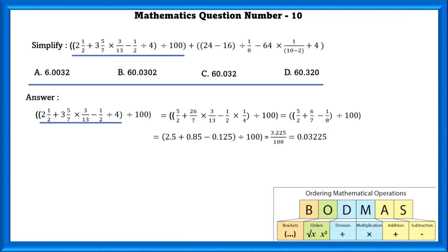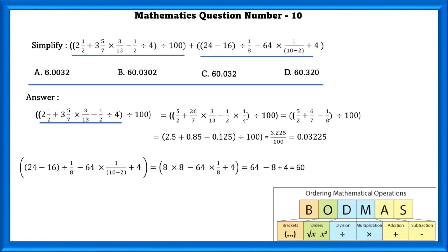Now we check the other term. If we simplify, we get 60. Since we have to add term 1 and term 2, the final answer is 60.03225.